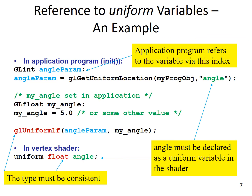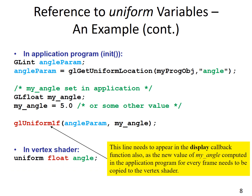Now let's look at an example of referencing a uniform variable. We define the index to the variable in a similar way so that the application program can refer to the variable via this index. The name of the variable must exactly match in the vertex shader and it must be defined with the qualifier uniform. The type of the variable must also match the type with which it is defined inside the program. While these definitions and referencing are present inside the init function, the call to glUniform1f must also appear inside the display callback function. This is because the new value of my_angle computed in the application program for every frame needs to be copied to the vertex shader.